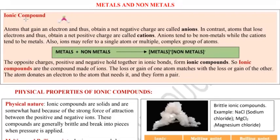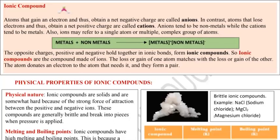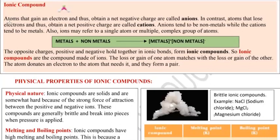What are the Ionic Compounds? Let's see. Atoms that gain an electron and thus obtain a net negative charge are called anions. So, these atoms that gain an electron gain anions.